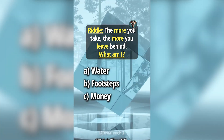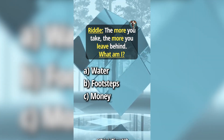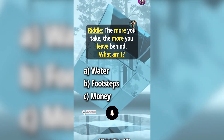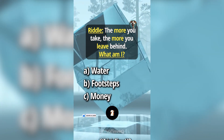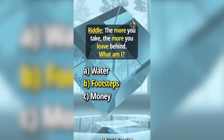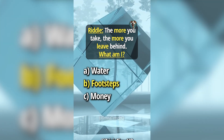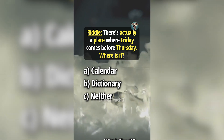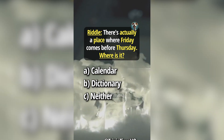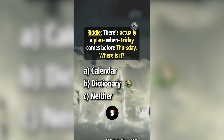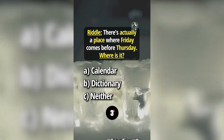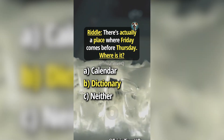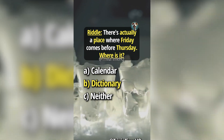Riddle: the more you take, the more you leave behind. What am I? Answer B, footsteps. Riddle: there's actually a place where Friday comes before Thursday. Where is it? Answer B, dictionary.